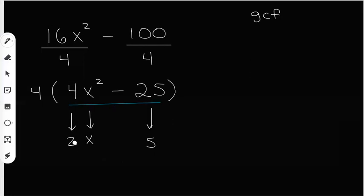So now I've got 2x and 5. What I need to do is make sure that I put that inside parentheses and I bring down my 4. Now what I can do is I can break down that difference of squares into a minus factor and a plus factor.